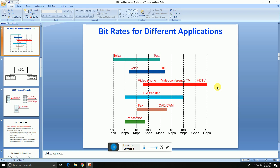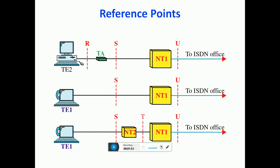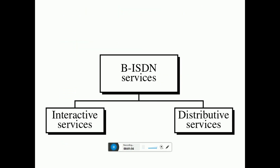At 10 Mbps we have video TVs, at 100 Mbps we have video conferencing TVs and HD TVs, and at 1 Gbps and 10 Gbps we have HD TVs. This covers the B-ISDN services, which include distributed services and interactive services.